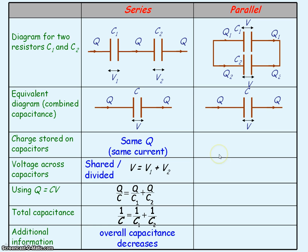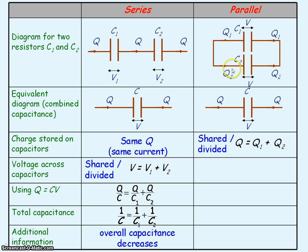In parallel, the charge stored on the capacitors is shared or divided, because the current in parallel is split between the components. So the total charge Q stored on our combined capacitor is equal to Q1, the charge stored on C1, plus Q2, the charge stored on C2.